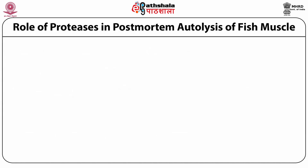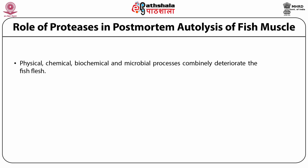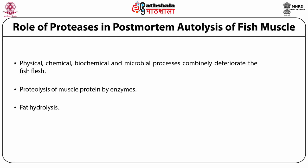During post-mortem deterioration of fish flesh, results stem from a complex combination of physical, chemical, biochemical and microbial processes. The first changes occurring in post-mortem fish muscle are due to endogenous enzymes promoting proteolysis of muscle proteins as well as the connective tissue. Moreover, fat hydrolysis also occurs. The muscle is not significantly contaminated by bacteria at this early stage.